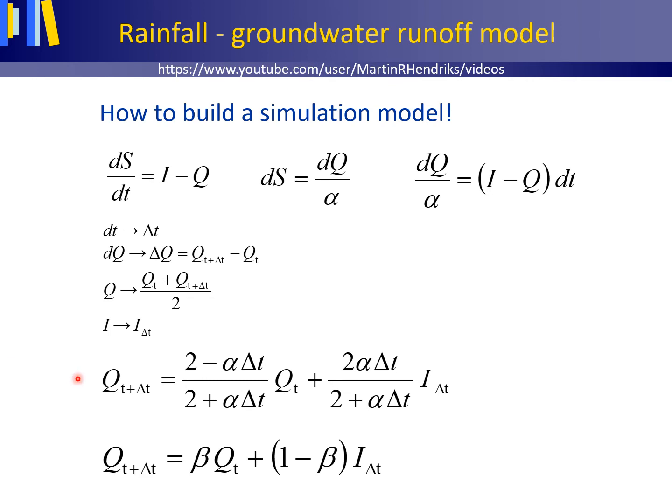and by replacing I by I delta t. I delta t is the input during time step delta t. This gives this equation, which after defining beta as this first factor, can be simplified to this equation.